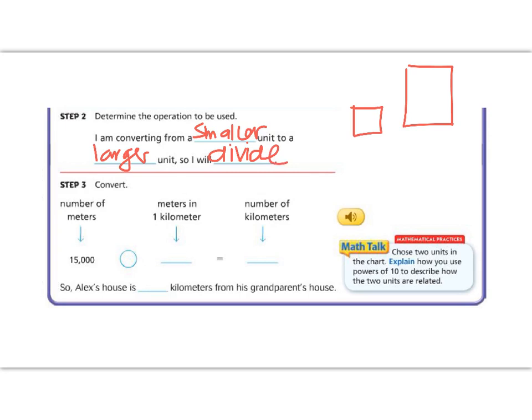So if I have 15,000 meters, I am going to divide by 1,000. And remember we got that because it was 10 times 10 times 10. And when we do that, we can cancel our zeros. So 1, 2, 3 means that it is 15 kilometers. So Alex's house is 15 kilometers from his grandparents' house. Great job so far, 5th graders. Let's keep going.